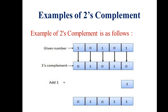The next step says add one to the least significant bit of the one's complement. So you just add one. The binary addition rule says that zero plus one equals one — so in the answer part you will get one.